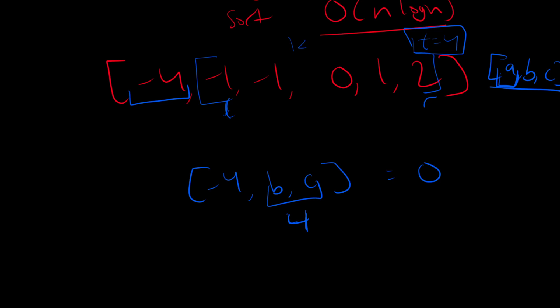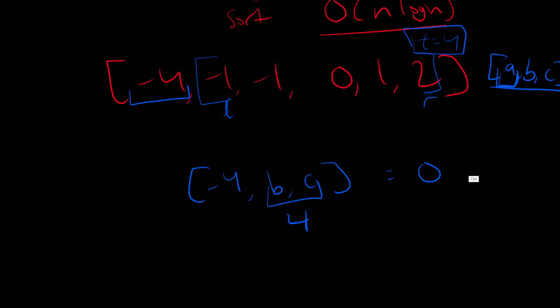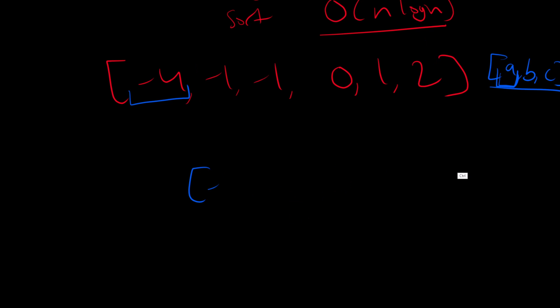Negative one plus two is one, which is less than four, so we increment left. Negative one again — still less than four, increment left. Zero plus two is two, still less than four, increment left again. One plus two is three, still less than four, but we can't have left and right at the same index because of the no-duplicates rule. This means negative four could not be a valid A value, so we eliminate it and move on.